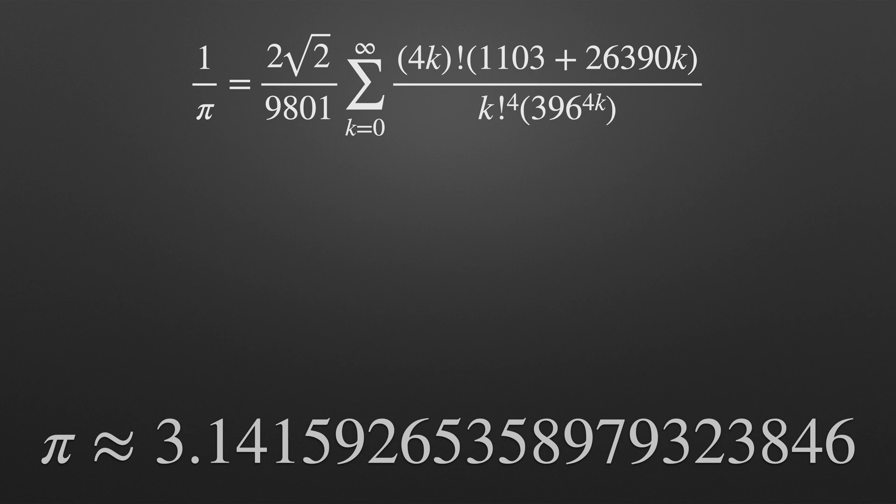I'm joking of course or maybe I'm not. Those exclamation marks they're factorials. So by way of example let's focus on the 4k factorial here. With k at 0 we get 0 factorial which is 1. Simple enough.